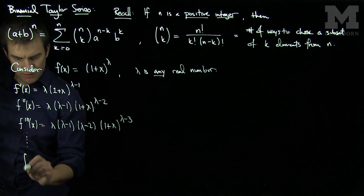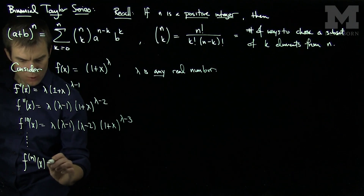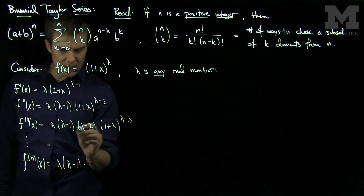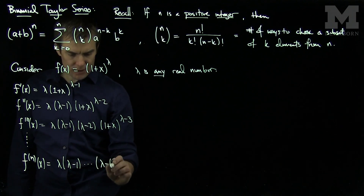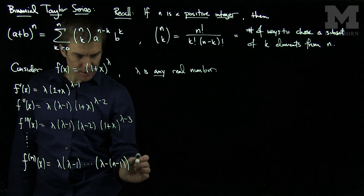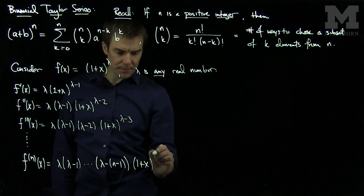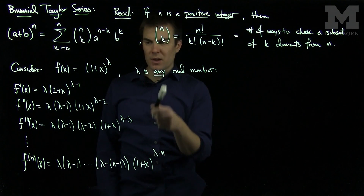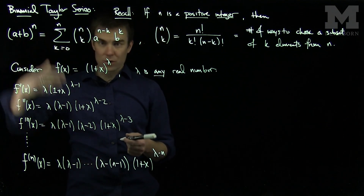If I take n derivatives, the nth derivative f^(n)(x) equals λ(λ − 1) all the way down to (λ − (n−1)), times (1 + x)^(λ−n). And since λ is any real number, not necessarily an integer, this sequence of derivatives will just go on forever.